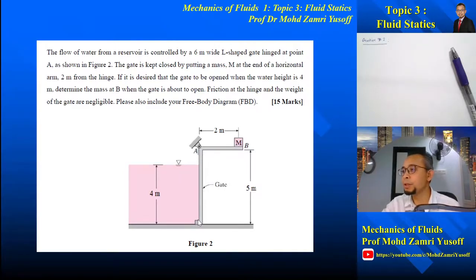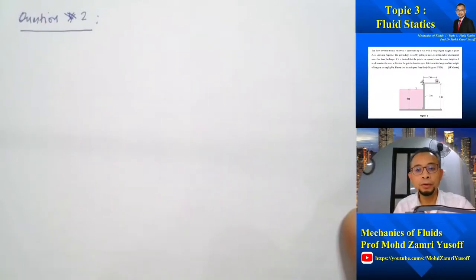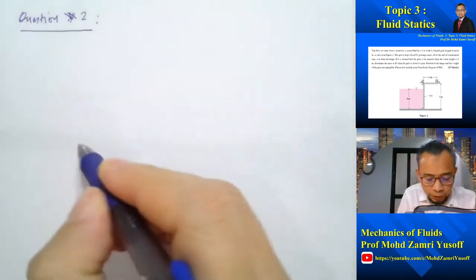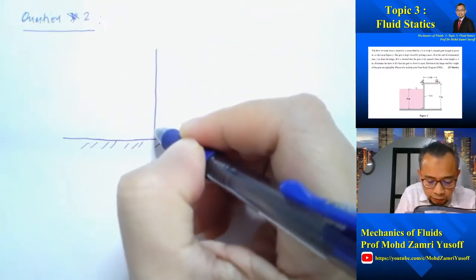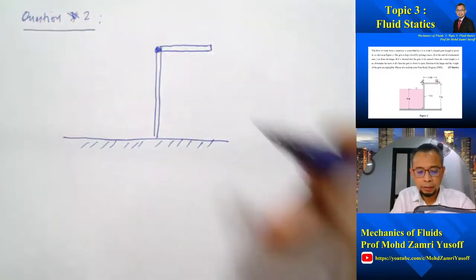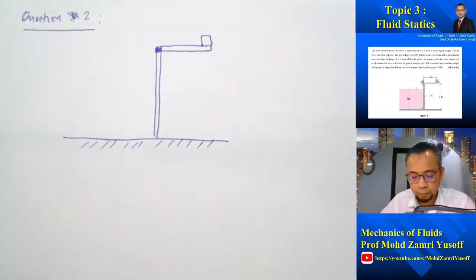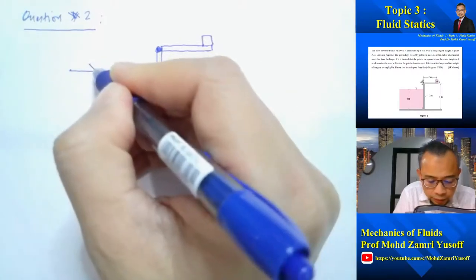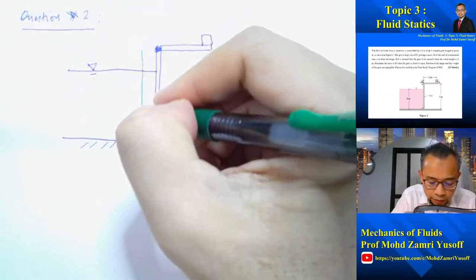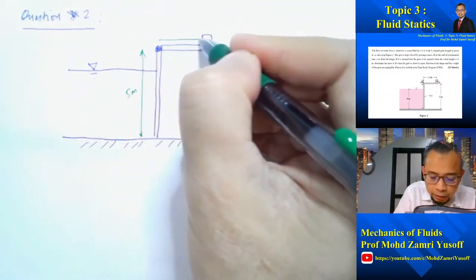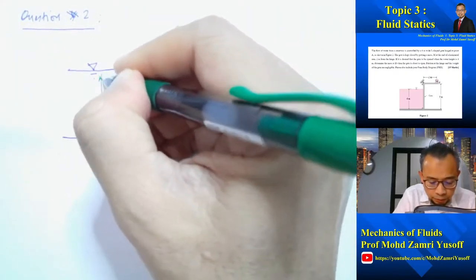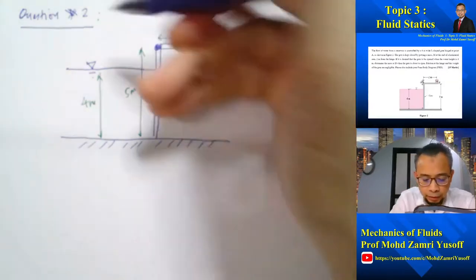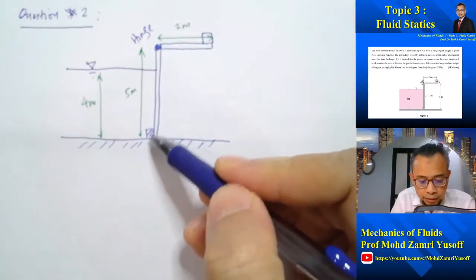So we have this gate with a stopper here. When the water level is 4 meters, the gate will start to open. So let me first draw the schematic diagram of the problem. We have a reservoir, this is the bottom part of the reservoir, and then this is the gate. The gate is hinged here, and we have a mass at the end here. Given that the height of the gate is 5 meters, this arm is equal to 2 meters, and the water level is equal to 4 meters. The gate is hinged here, and then at the bottom there is a stopper.